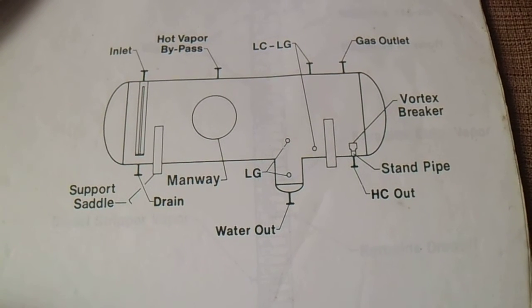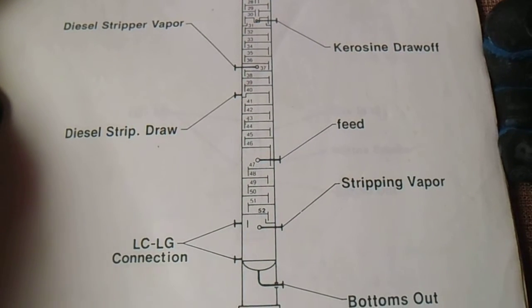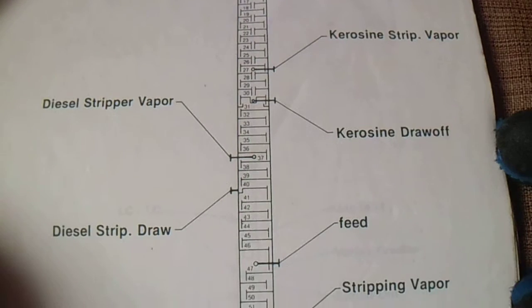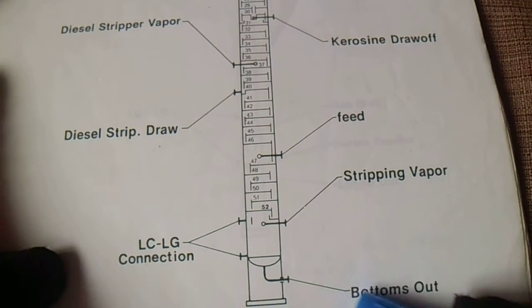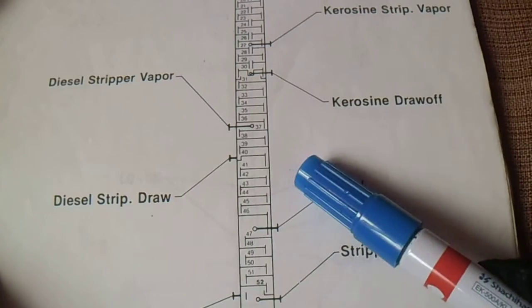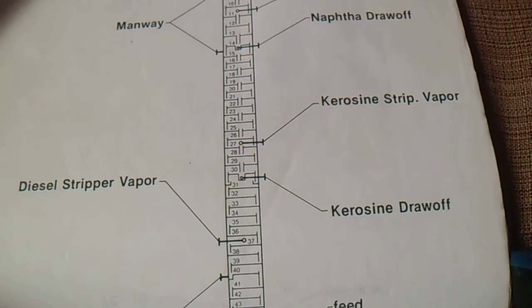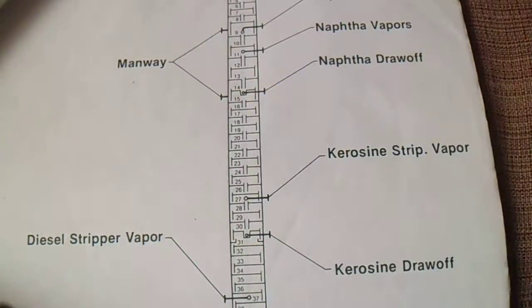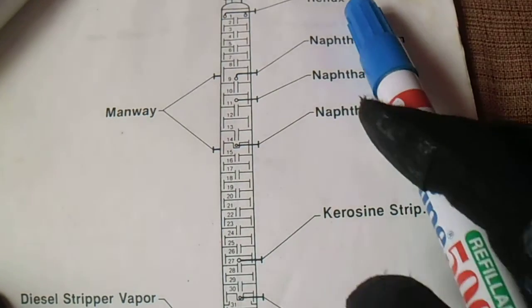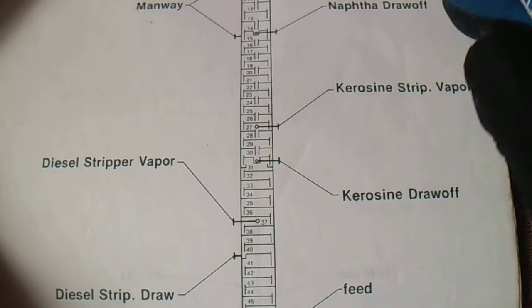This is a product fractionator. From the bottom we have bottoms out with LC, LG connection, diesel strip draw feed, kerosene draw off, and diesel stripper. We have kerosene strip bay 4, a manway, naphtha draw off, vapors, and return. From the top is the vent and reflux.